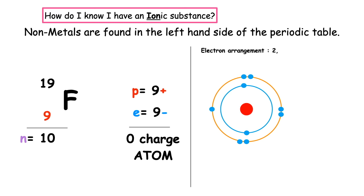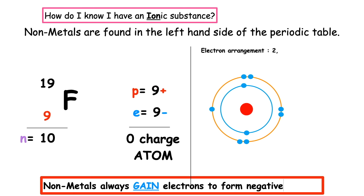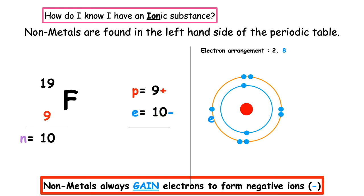All elements want to achieve stability by having a full stable outer electron shell. Non-metals always gain electrons to form negative ions. So fluorine will want to gain 1 electron to have the electron arrangement 2, 8. This means that we've changed the number of electrons — we now have 10. 9 positive plus 10 negative equals minus 1 charge. So we now have a negatively charged particle which is known as an ion.